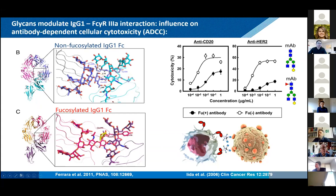This IgG receptor 3 is shown here, and it also happens to be glycosylated. At the interface of the receptor and the antibody, these glycans meet — at least they do when the fucose is not present — and we have quite productive hydrogen bonds. When the fucose is present, it acts as a steric hindrance and blocks quite some hydrogen bonding from being formed.